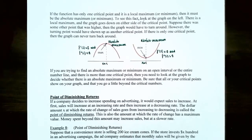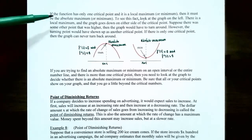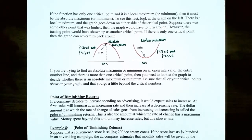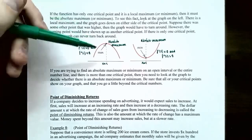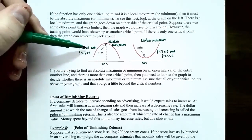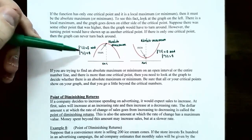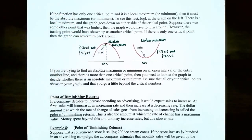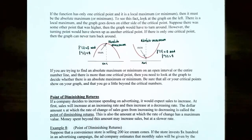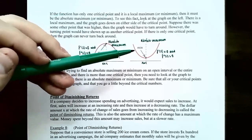A special case of the second derivative test: if the function has exactly one critical point and it's a local maximum or minimum, then it's actually the absolute maximum or absolute minimum for the function. If the graph is concave down everywhere with one critical point, that critical point is the absolute maximum. Similarly, if the graph is concave up everywhere with one critical point, that critical point is the absolute minimum.